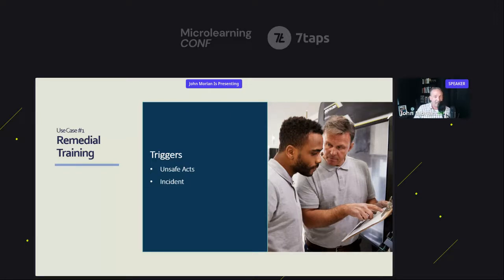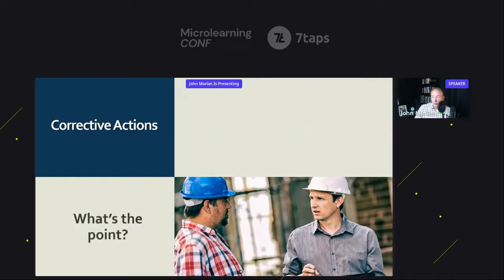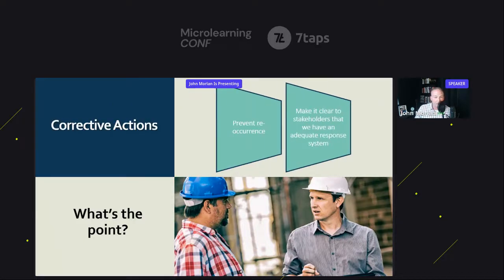Anytime you have an incident, corrective actions are the way, as an organization, we address the issue. There are some important reasons we do this. Number one, we want to prevent reoccurrence — if someone's injured, we don't want another person to get injured for the very same reason. We also want to make it clear to stakeholders — the employees, OSHA, and insurance carriers — that we have an appropriate response system in place.